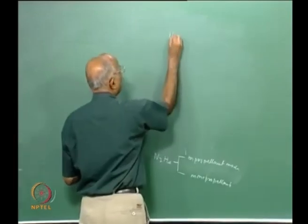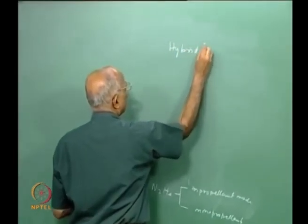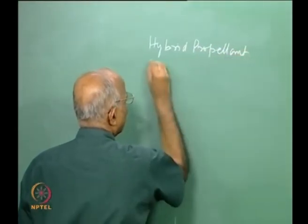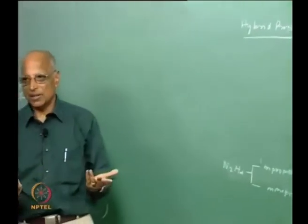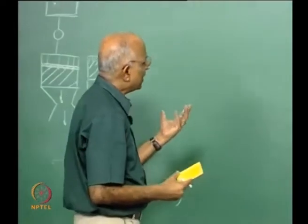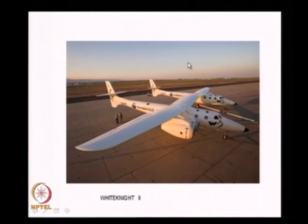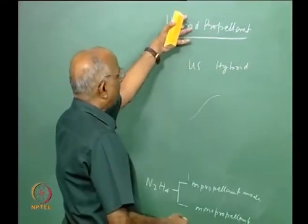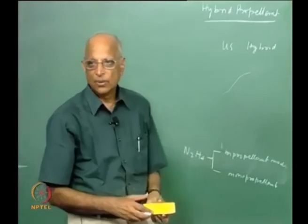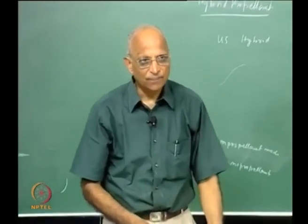I will spend a couple of minutes on hybrid rockets in the next class, because while earlier they were not very promising, a spacecraft called White Knight is now used to take a space capsule powered by a hybrid rocket. This aircraft takes tourists to a height of 14 kilometers, from where they go into a suborbital flight and return. We will spend some five minutes on hybrid rockets in the next class and then get into the question of combustion instability. Thank you.